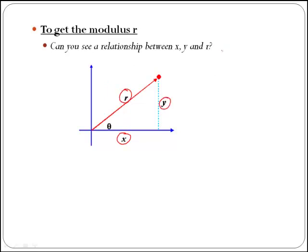If you realize, x, y, and r are the sides of a right-angled triangle, and therefore they are related through Pythagoras theorem. Pythagoras theorem says that hypotenuse squared is equal to the addition of the squares of the other two sides, which is x squared plus y squared.